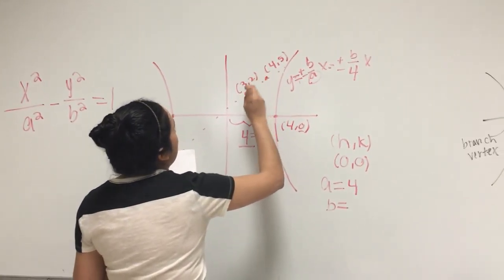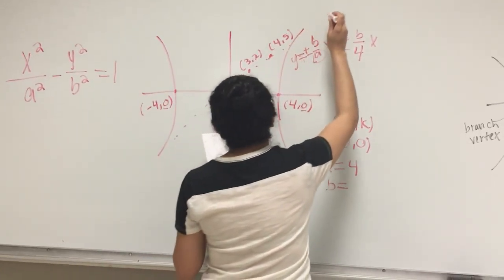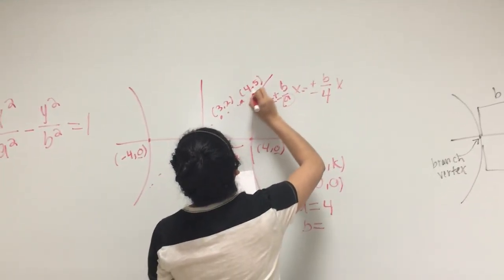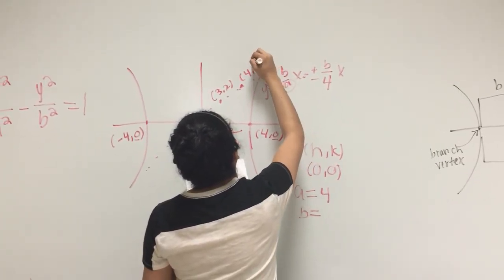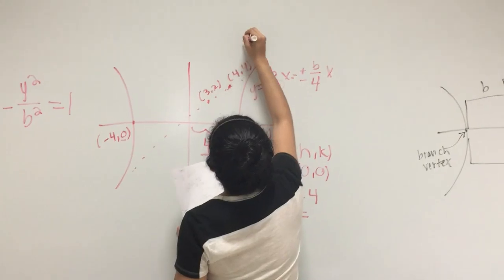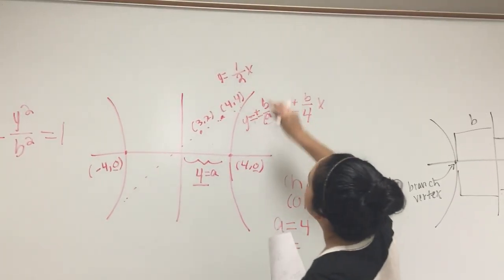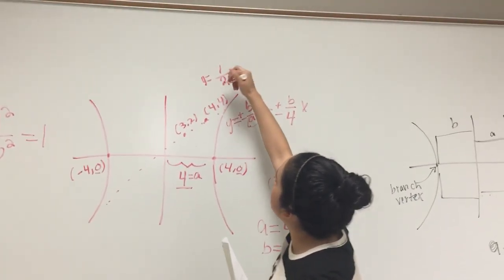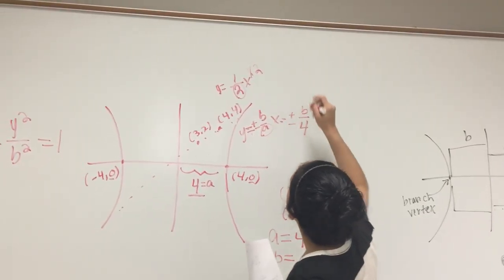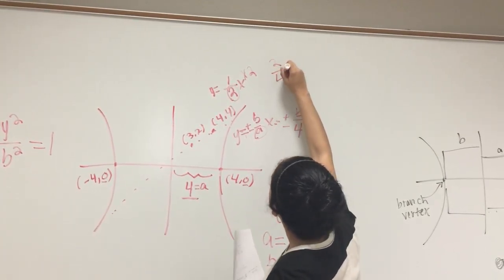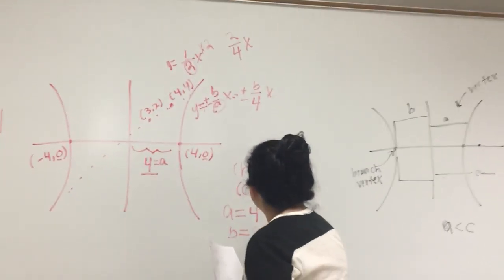We know that our line is going up 1, 2 to the side. So we have y equals 1 over 2x. Since our asymptote is 4, we want to make this a 4, so we're going to multiply by 2. Whatever we do to the bottom, we have to do to the top. So now we're going to have 2 over 4x. So that's going to give us our B, 2. So our B is 2.